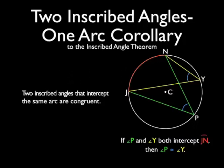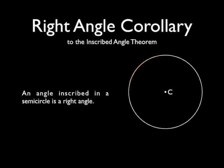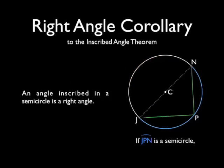We also have the right angle corollary, an angle inscribed in a semicircle is a right angle. For that, we'll need a semicircle. Arc JPN is a semicircle, and that means that angle P inscribed in the semicircle is a right angle.